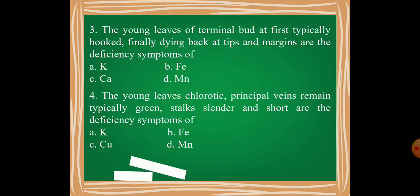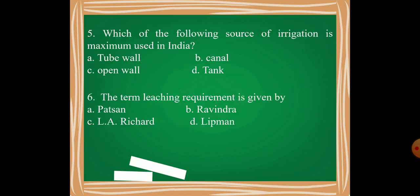Then the sixth one is: The term leaching requirement was given by Patson, Ravindra, L.A. Richards, or Lipman?